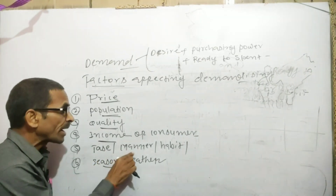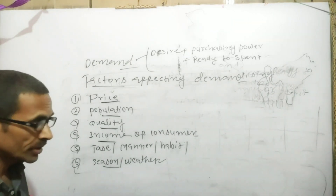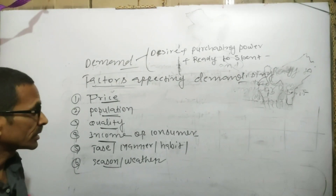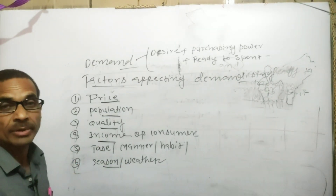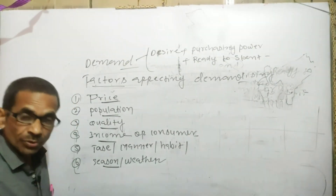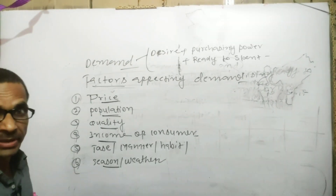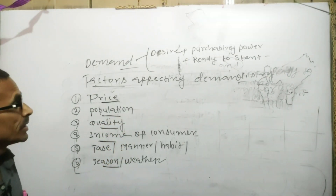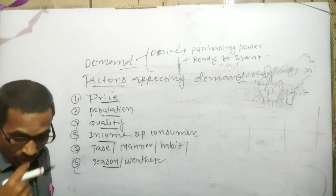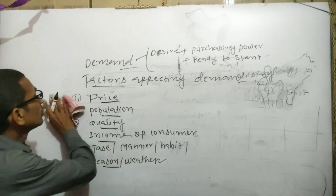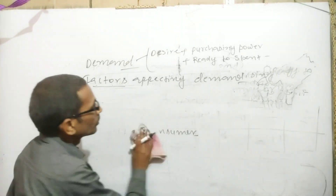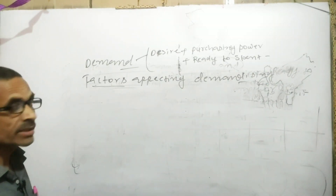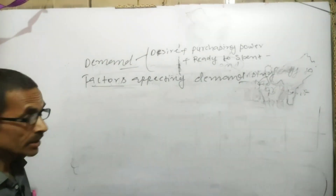Yadi common people ke taste mein, manner mein, habit mein, rituals mein, protocols mein broad level par koi change aata hai, to uski wajah se bhi kisi khas particular goods ya service ki demand badh ya ghatt sakti hai. Season aur weather ke change hone se bhi kuch goods ki demand badhegi, kuch ki ghategi. Ye sab factors hain jo demand ke level ko fix karte hain ya usme rise aur fall ke liye responsible hote hain. Ab main aapko third term se parichit karata hun jiske baad hum elasticity jaisi complex term ko samajhne ke yogya ho jaenge.